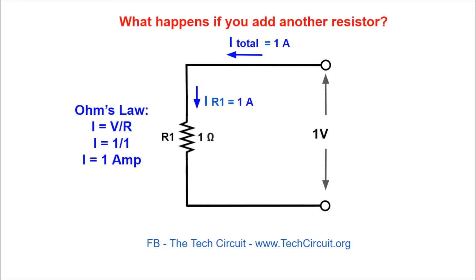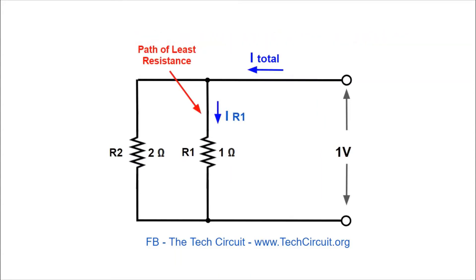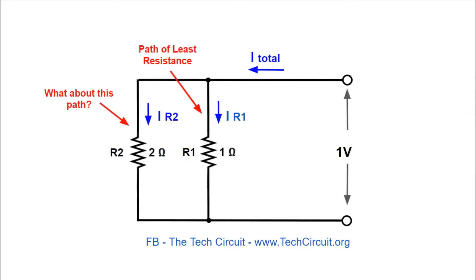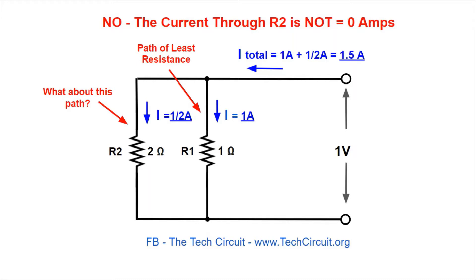What if you wanted to add a higher resistance path to the circuit? Let's say you add R2 with a value of 2 ohms. Because R1 is only 1 ohm, it will be the path of least resistance. So does that mean R2 will now be ignored — that is, is the current through R2 zero amps? No, it's not. Ohm's law says that 1 volt across a 2 ohm resistor — voltage divided by resistance — must equal one half of an amp. And that's the law. In fact, the total current through the circuit, I total, is now 1.5 amps instead of 1 amp. So the 2 ohm resistor created its own current path that added to the total current.